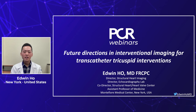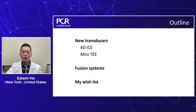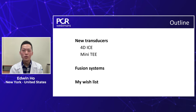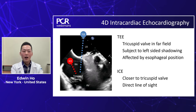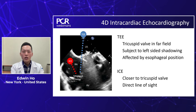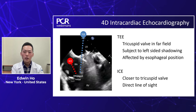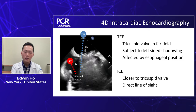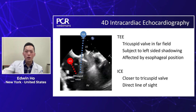Let's discuss future directions in interventional imaging. We'll cover new transducers: 4D ICE, mini TEE, and fusion systems as alluded to by Agustin, plus a wish list for where things should go. There have been great TEE imaging examples from colleagues, but as discussed, there are significant challenges: shadowing, esophageal position, and far-field imaging for the tricuspid valve. That's where excitement about ICE comes in — ICE images from the right atrium directly, much closer to the valve, with a direct line of sight to avoid shadowing.